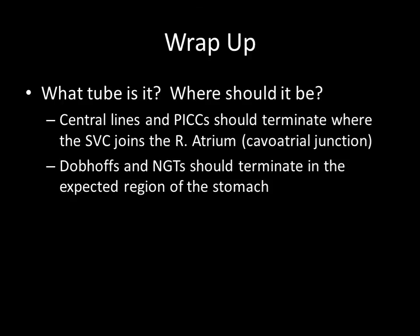To summarize: when looking at lines on ICU chest films, verify what type of line it is, where it should be headed, and what it's supposed to be doing. Rule out iatrogenic complications such as subcutaneous emphysema, pneumothorax, or signs of hemorrhage with an expanding hematoma when placing a central line. Also make sure Dobhoffs and NG tubes aren't terminating in the lung fields — it can be disastrous to start a feed when the tube is in the airway.